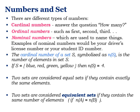There are different types of numbers when dealing with sets. Cardinal numbers answer the question 'how many.' Ordinal numbers indicate order, such as first, second, or third. Nominal numbers are used to name things, such as a driver's license number or student ID. The cardinal number of set S is the number of elements in S. For example, if S = {blue, red, green, yellow}, the cardinal number is 4.